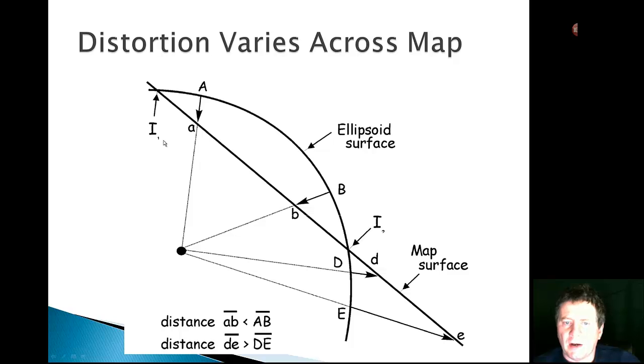So this varies across the map and as I've said it's correct at the intersection points. Compressed here, stretched there.